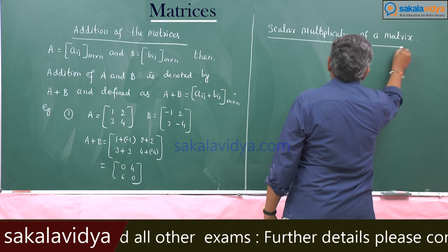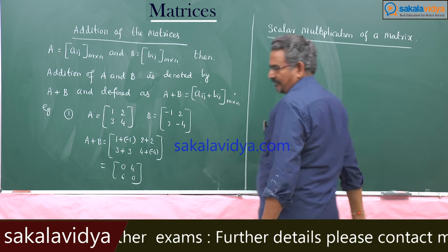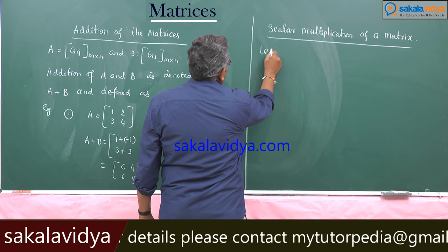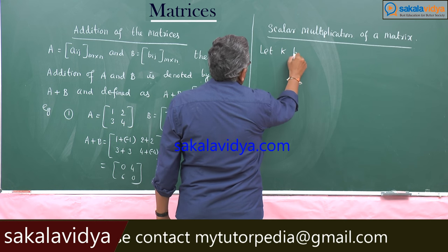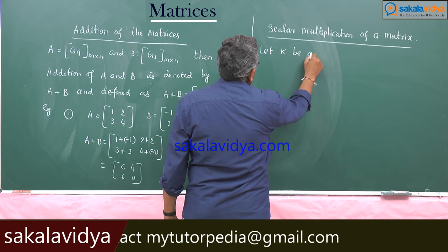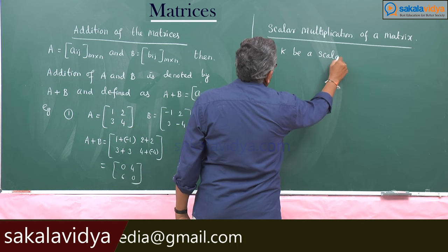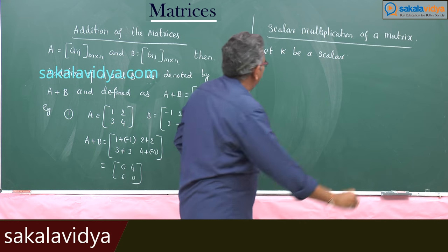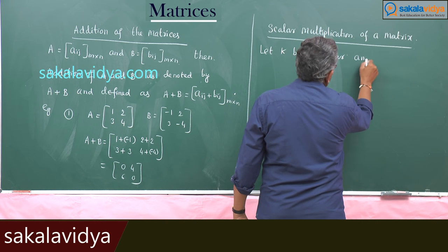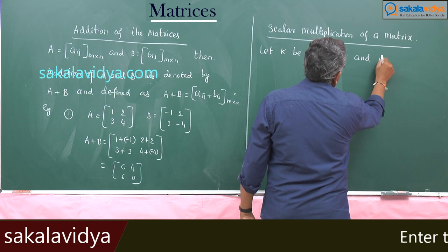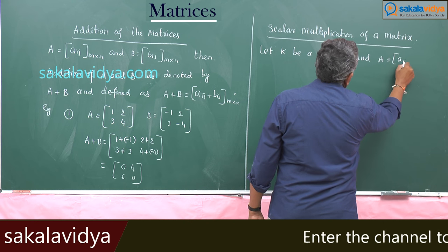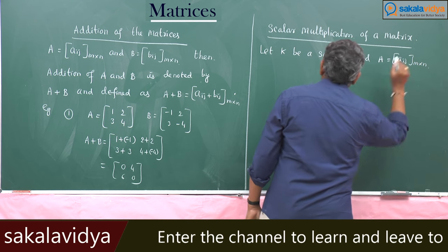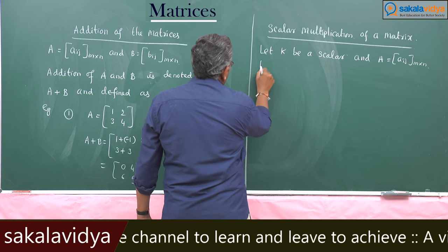Scalar Multiplication of a Matrix. Suppose, let K be a scalar and A is equal to a_ij, an m by n matrix.